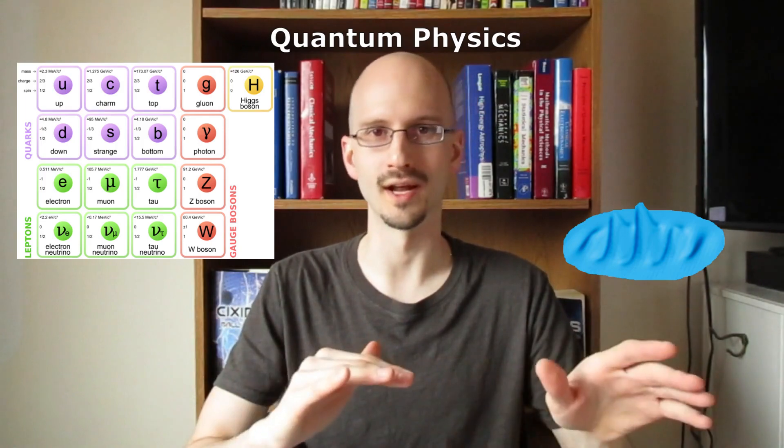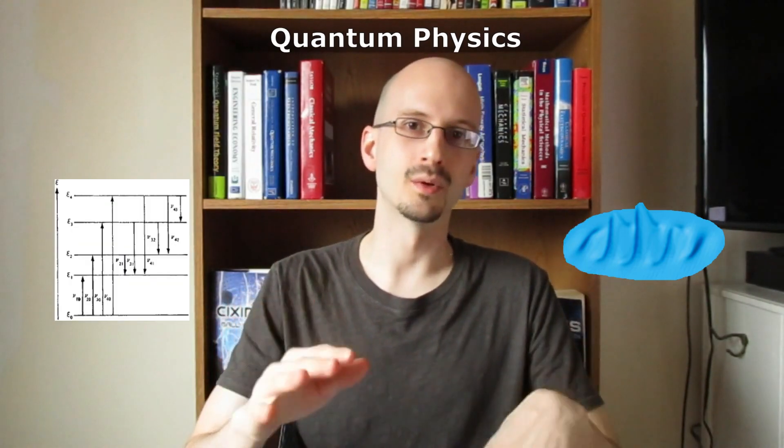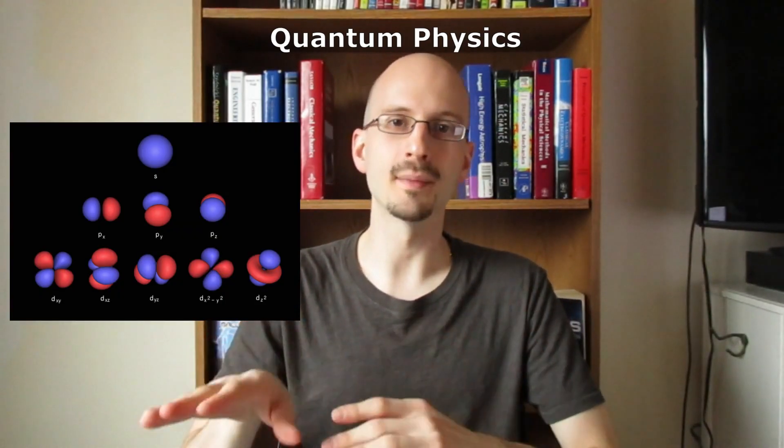On the smaller end of things, we have quantum physics, which talks about the elementary building blocks of matter and energy. We call them particles, but they're really something between a particle and a wave. The quantumness of quantum physics tells us that these particle waves can only have certain specific energies, and momenta, and spins, and charges, and that's how we get things like atomic orbitals.